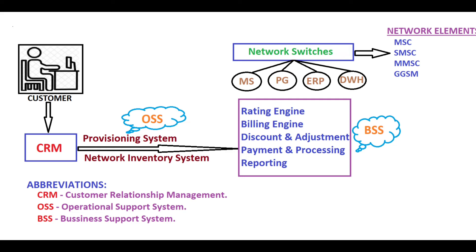These network elements are required to generate usage data for billing, which is called CDR - Call Data Record - or UDR - Usage Data Record - also referred to as events. CDR consists of: calling party, called party, date of call, start and end time of call, and a unique sequence ID or IMEI/IMSI. CDR is captured in the form of ASN.1, binary, or ASCII format.